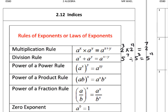Power of power rule: if we have two powers, multiply them. So (a^x)^y equals a^(x times y). For example, (2^3)^4 — because it's power of a power, we multiply the powers: 3 times 4 equals 12, so the answer is 2 to the power 12.